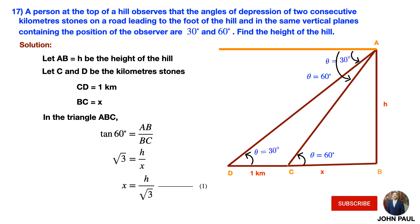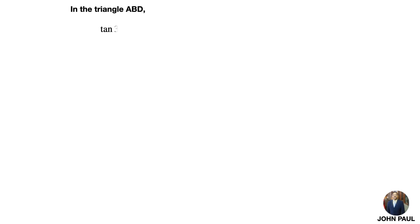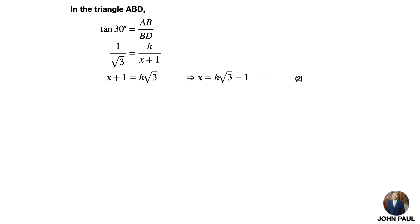Now we will consider the other triangle ABD, where the angle is 30 degrees. Tan 30° equals AB by BD. Tan 30° is 1 by root 3, so 1 by root 3 equals H by (X plus 1). Cross multiplying, X plus 1 equals H root 3, so X equals H root 3 minus 1. Consider this as equation 2.